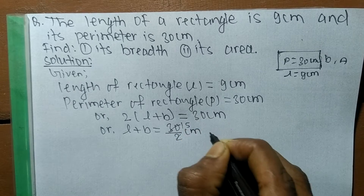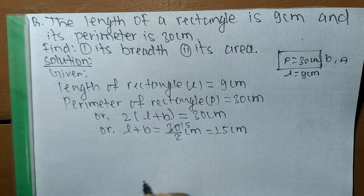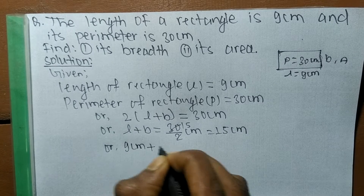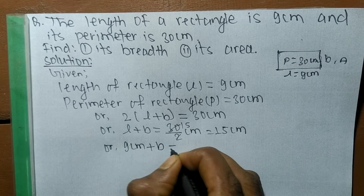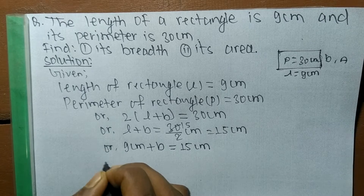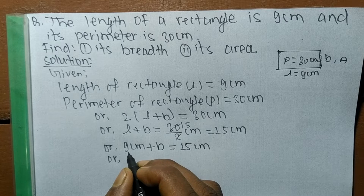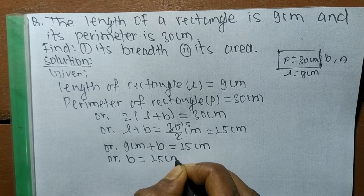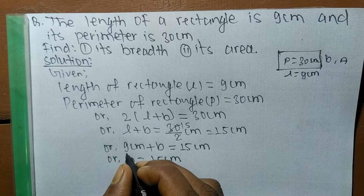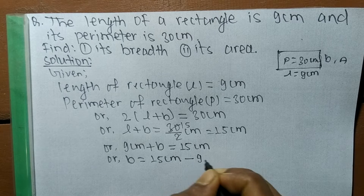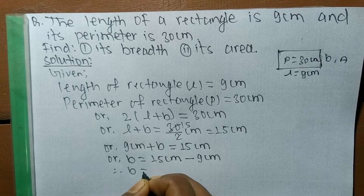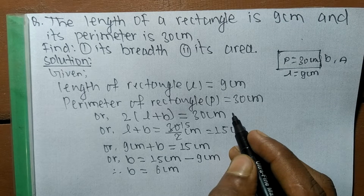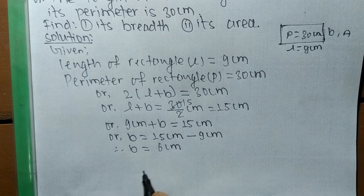So L + B = 15 centimeters. The value of L is 9 centimeters, so 9 + B = 15 centimeters. Moving 9 to the other side, the plus becomes minus: B = 15 − 9 centimeters. Therefore B = 6 cm. So the breadth of the rectangle is 6 cm.